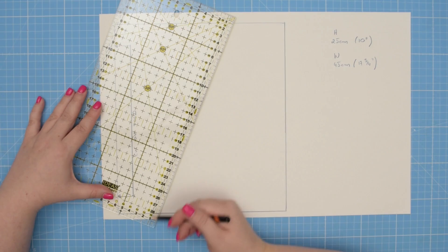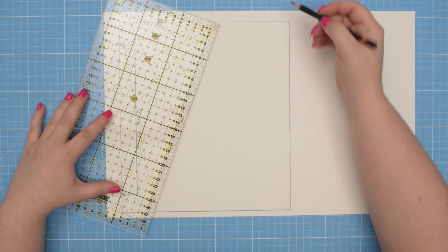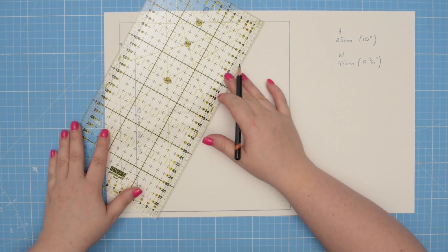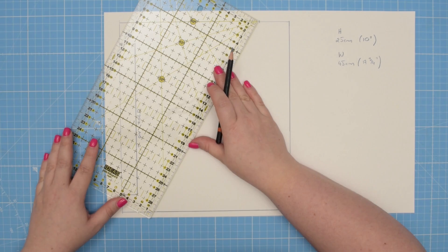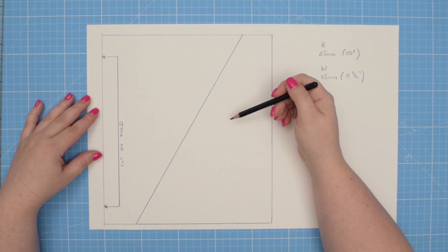To do that, you can simply take a ruler and draw a line in any angle that you like. But I like to use the 60 degrees line on my ruler. I'm going to measure about 4 centimeters from that corner, which is about an inch and a half. And then I'm going to use the 60 degrees line on my ruler to draw the angled line.